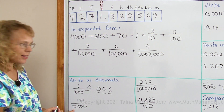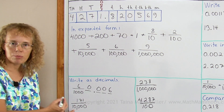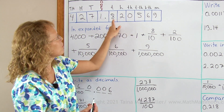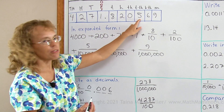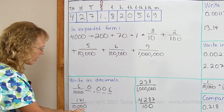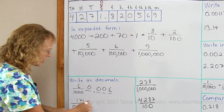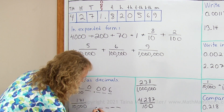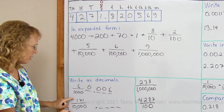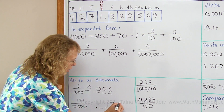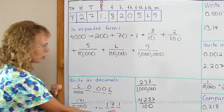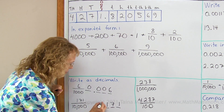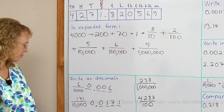This one here has ten thousand as a denominator — so ten-thousandths. It means I need to have four decimal digits, just like there are four zeros. So four decimal digits after the point, and then I put the 1, 7, and 1 over here so that something reaches the ten-thousandths place. Like that.